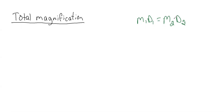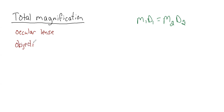Before we start talking about what you actually see underneath the microscope, let's talk a little bit about total magnification. The point of a microscope is to magnify what we are looking at so that we can see it more clearly. On our microscopes, there are two different types of lenses that are going to magnify what we see: ocular lenses and objective lenses.